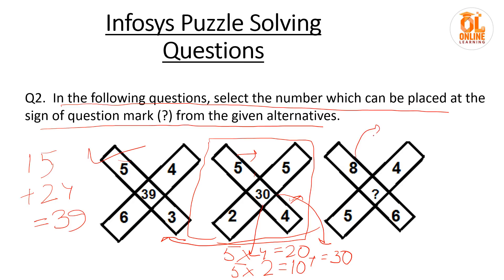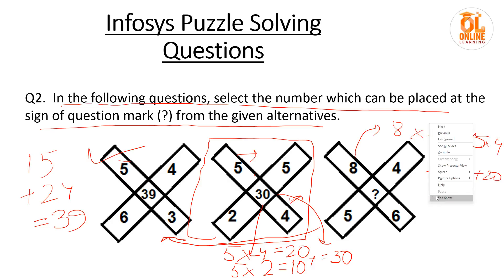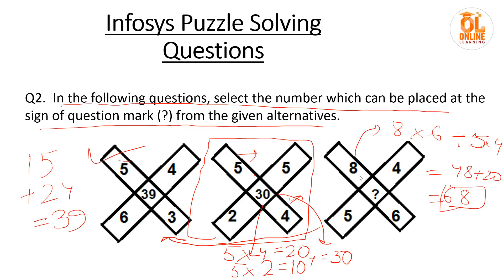Now just put it here — 8 into 6 plus 5 into 4, that will be 48 plus 20, which equals 68. So 68 will be your answer. Hope you have understood. Now let us move to the next question.